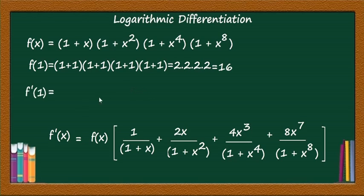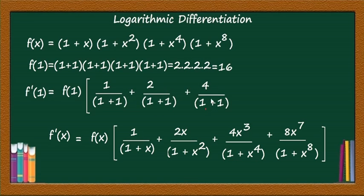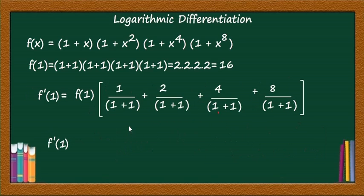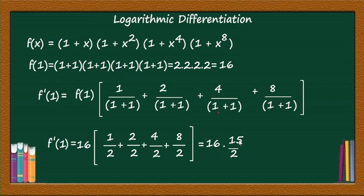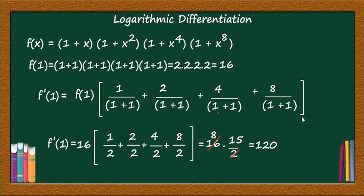Now f'(1) = f(1)·[1/(1+1) + 2/(1+1) + 4/(1+1) + 8/(1+1)] = 16·[1/2 + 2/2 + 4/2 + 8/2] = 16·[1/2 + 1 + 2 + 4] = 16·(15/2) = 8·15 = 120. So f'(1) = 120. With this I will conclude this session and continue with other problems in the next video. Thank you.